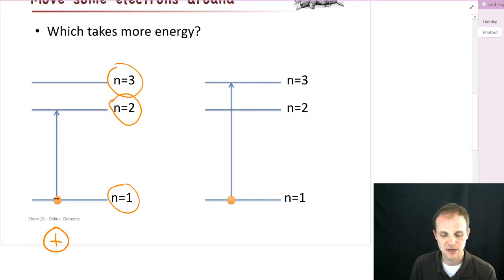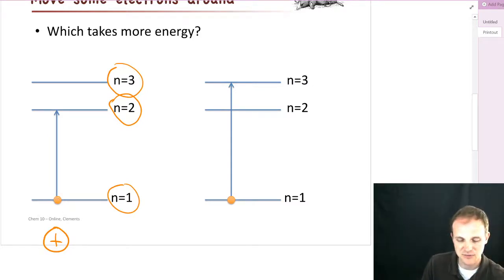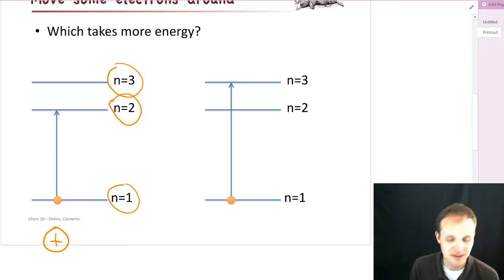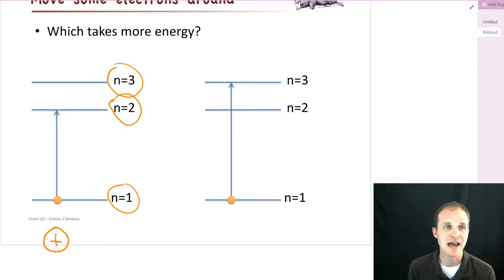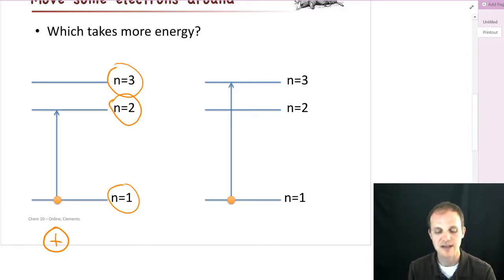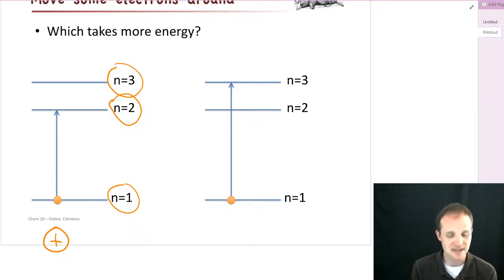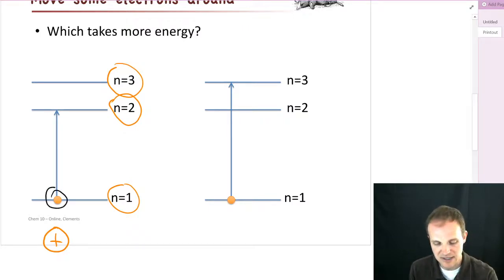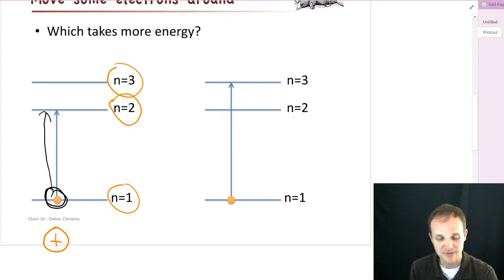But we're going to talk about what happens when electrons move around. Can an electron move from n equals 1 up to n equals 2 if there's space there? Let's say n equals 2 is empty — we've got hydrogen with just one electron at n equals 1 — and it's moving up to n equals 2. Can we do that? The answer is yes. But it's not going to do it all by itself, because the electron is really happy down there, as close to that positive charge as it can be.